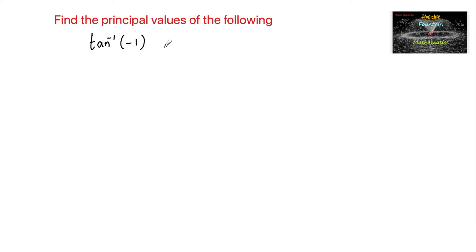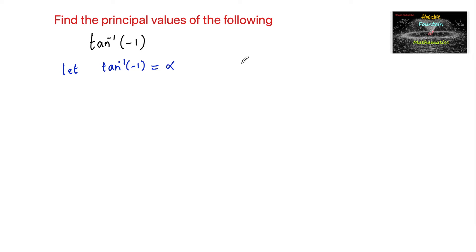Find the principal value of tan inverse of negative 1. Let us consider tan inverse of negative 1 is equal to alpha, where alpha must belong to minus pi by 2 to plus pi by 2.